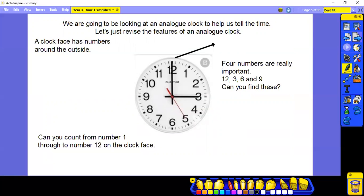So, the clock has numbers around the outside. Four of these numbers are really important. The number 12, the number 3, the number 6 and the number 9. Can you find these? And can you count from number 1 through to number 12 on the clock face?